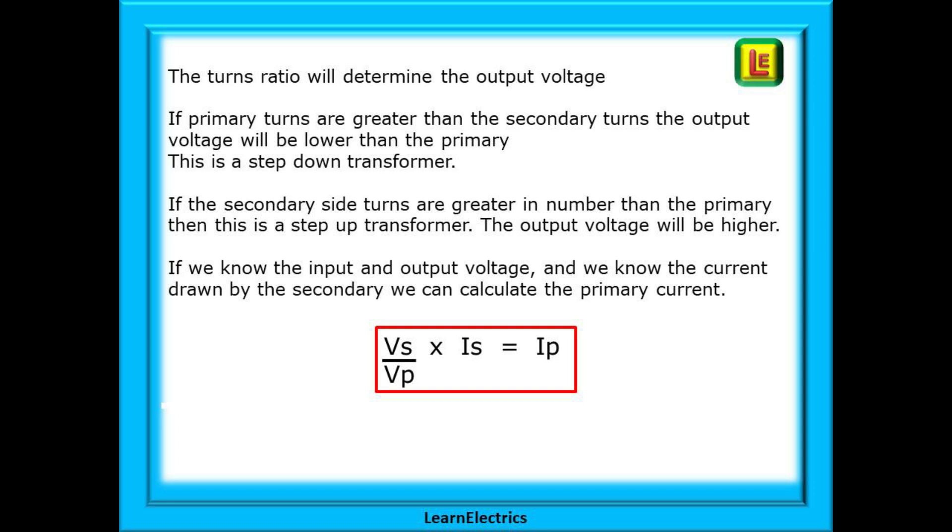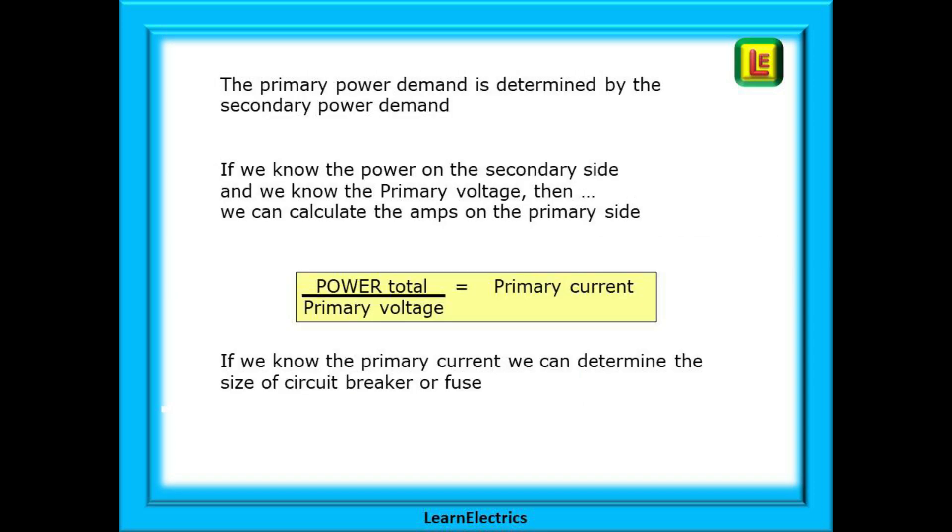If we know the input and output voltage, and we know the current drawn by the secondary, we can calculate the primary current. The primary power demand is determined by the secondary power demand. If we know the power on the secondary side and we know the primary voltage, then we can easily calculate the amps on the primary side. And then, if we know the primary current, we can determine the size of a circuit breaker or fuse.